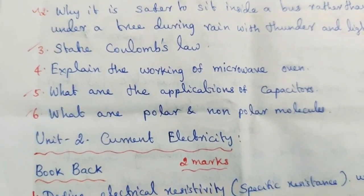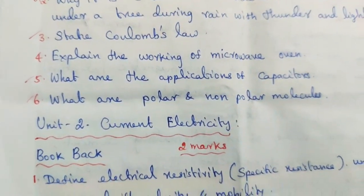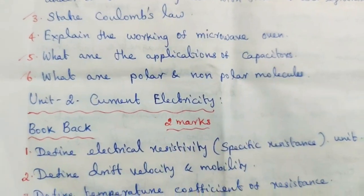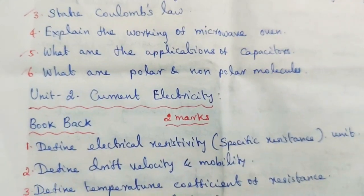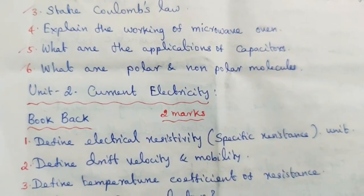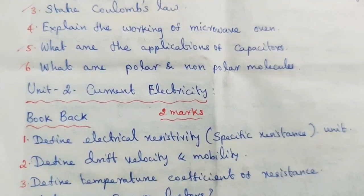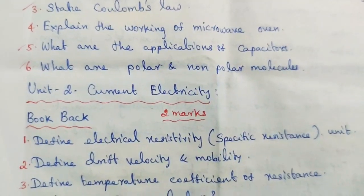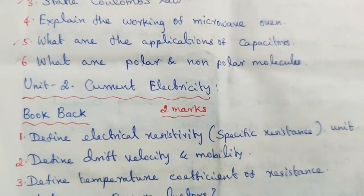Unit 2: Current Electricity. 2-mark book back questions. Question 1: Define electrical resistivity or specific resistance — give its unit.